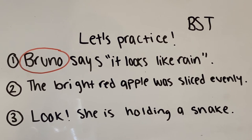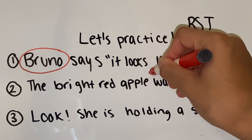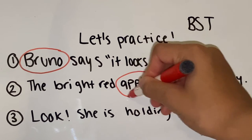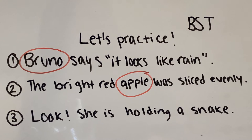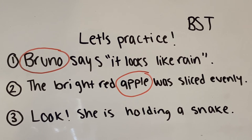In sentence two, the subject is apple. One way we can figure out that it is apple is because of the adjectives used to describe apple. The apple is being discussed, which is why the narrator is describing it. They say that it is bright red and that it was sliced evenly.